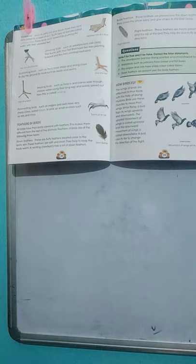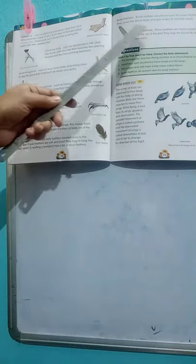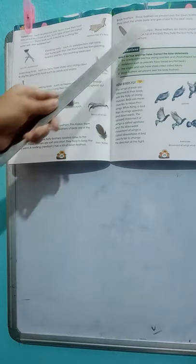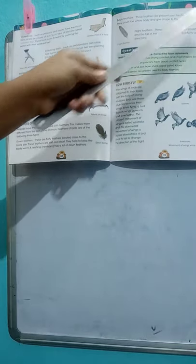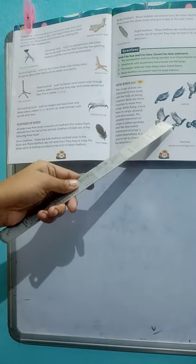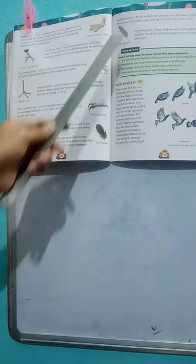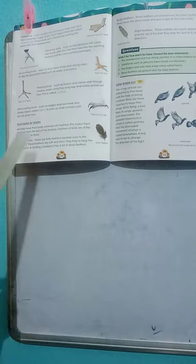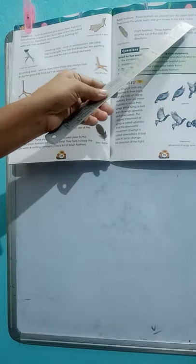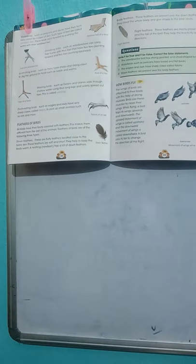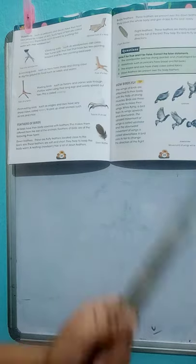Now, body feathers. These feathers are present over the down feathers. That means they cover the down feathers and they cover the whole body and give shape to the bird's body. Just like muscles give shape to our body, in birds, body feathers give shape to their body.